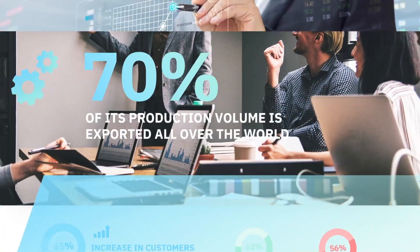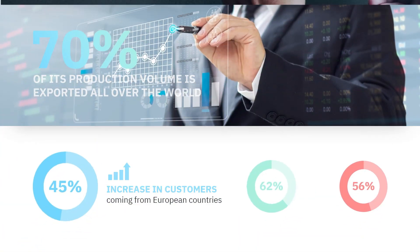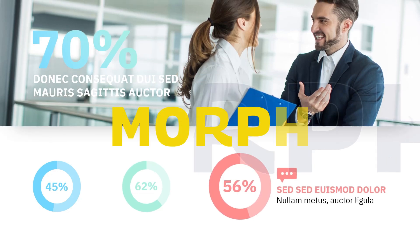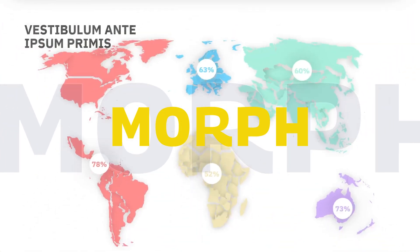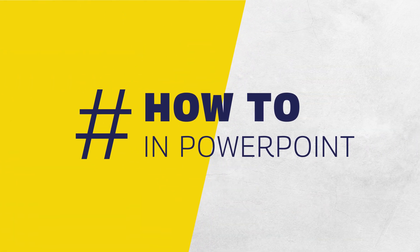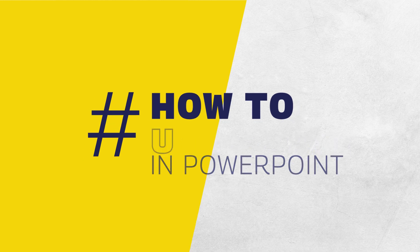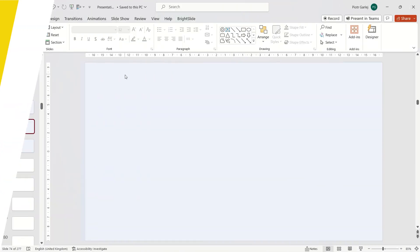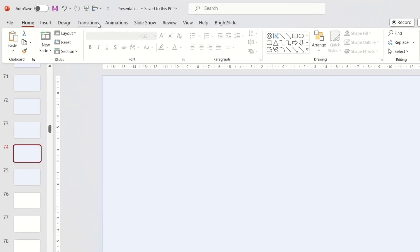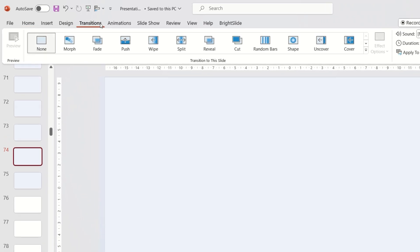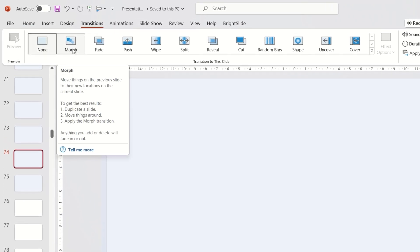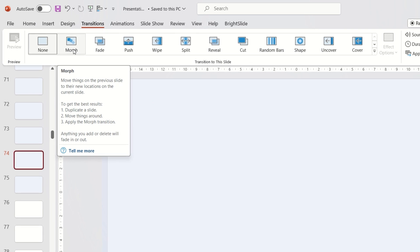One of the most interesting features in PowerPoint is the function called Morph. Today I'll show you how to use it and create fantastic and engaging slides. This function is located in the Transitions tab. When you hover over it, PowerPoint displays a small instruction.